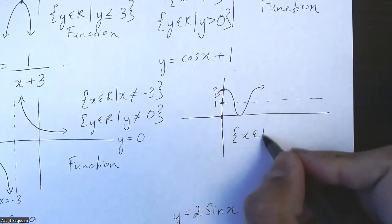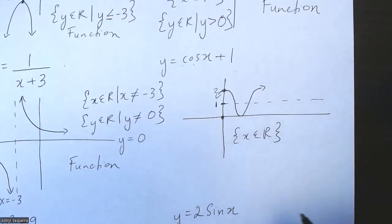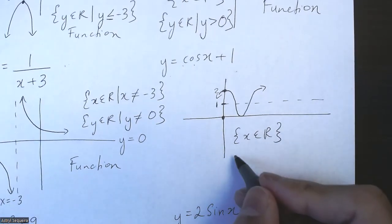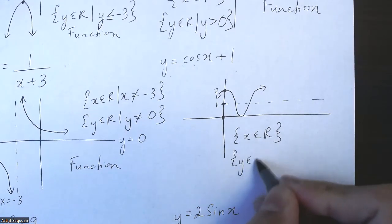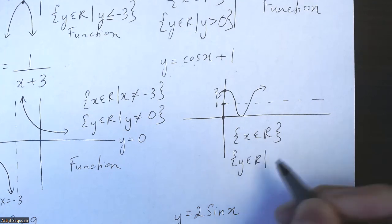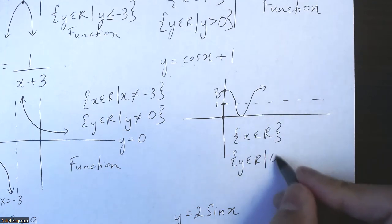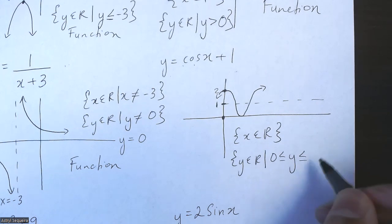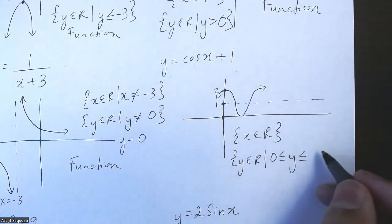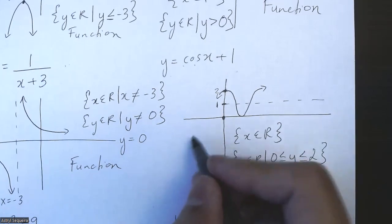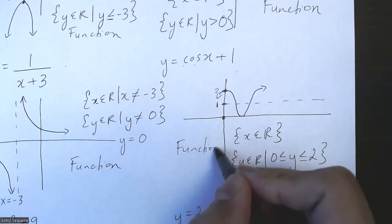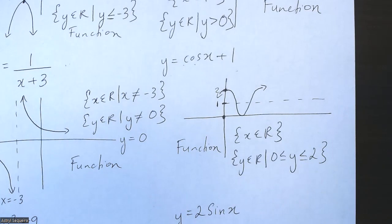So my domain is just all real numbers — this is true for all cosine and sine graphs. My range is y such that my minimum value is zero and my maximum value is two, so y is between zero and two. All cosine and sine functions are functions because they pass the vertical line test.